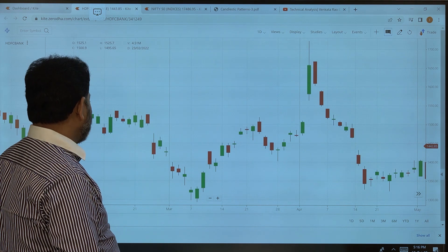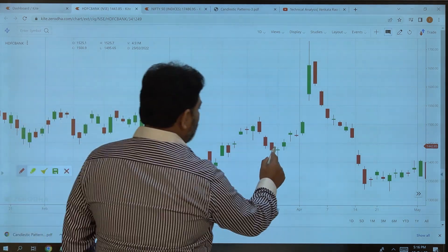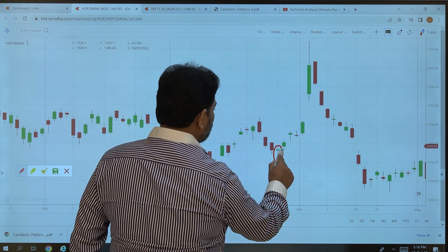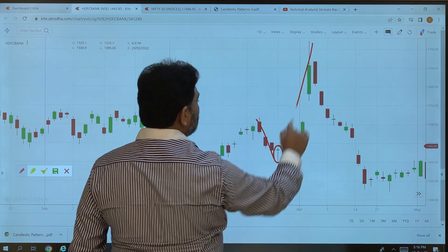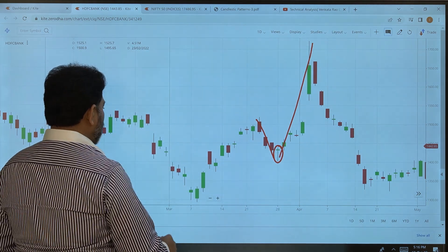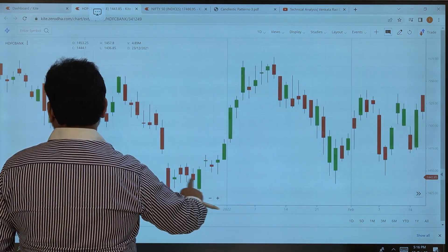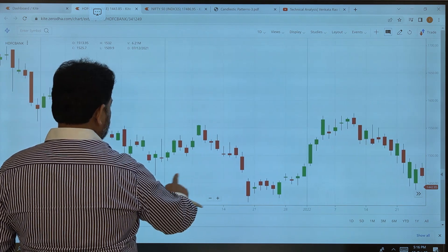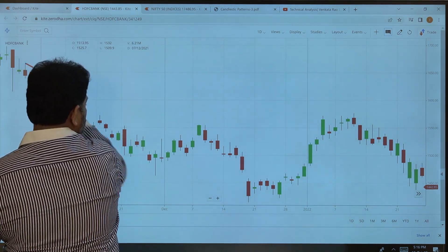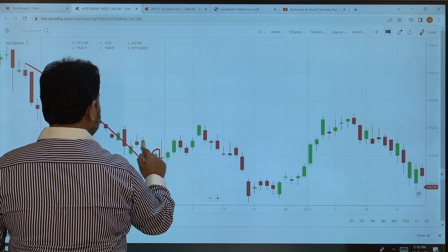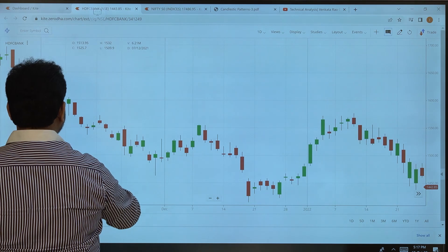Let's look at HDFC Bank. Let me see where a hammer formed here. Somewhere here is a hammer. It formed in a downtrend. Let's see almost all charts. Somewhere here it formed. Let's try to find a candle in a downtrend. Here is a downtrend. Here a hammer formed. We can plan entry and exit based on this high.